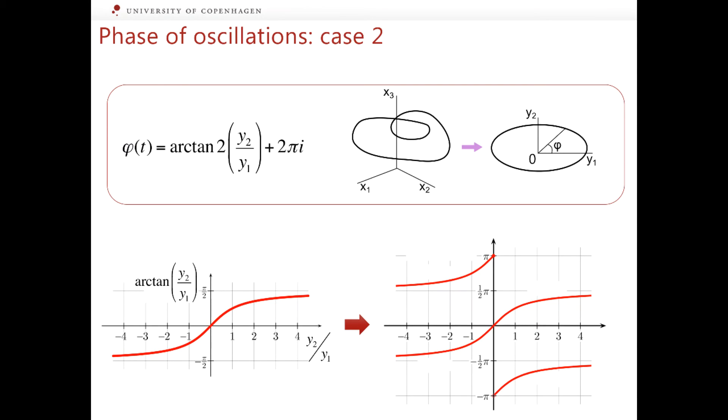This function depends not only on the value of its argument y_2 over y_1 but also on the sign of the denominator y_1. For a positive value of y_2 over y_1, if y_1 is positive, arctan2 coincides with a simple arctan. However, if y_1 is negative, arctan2 takes values from the lower branch of the graph. Similarly, if the argument of arctan2 is negative but y_1 is positive, this function coincides with arctan. But if y_1 is negative, we choose the upper branch of the graph.